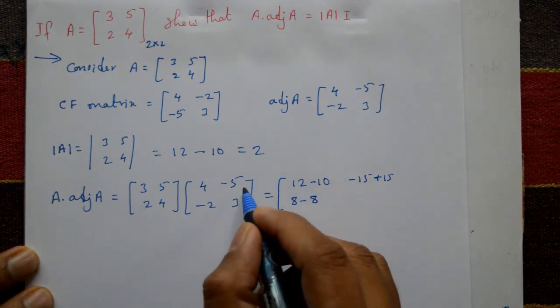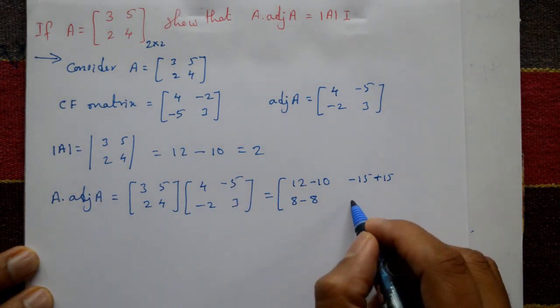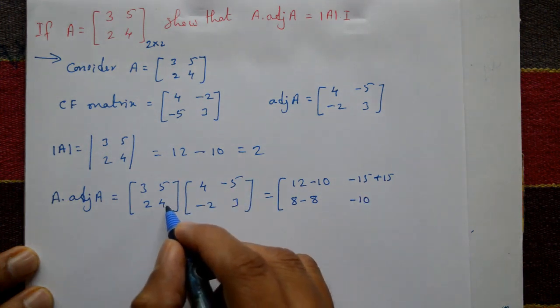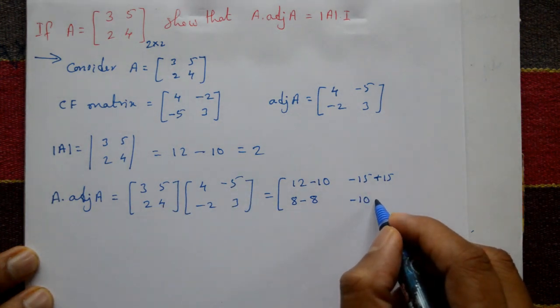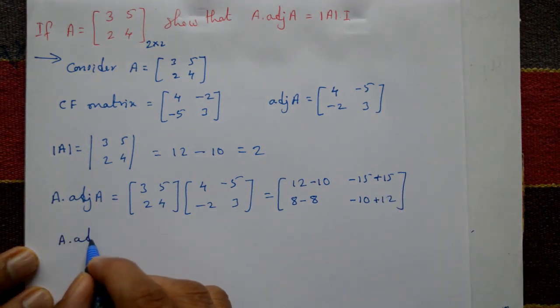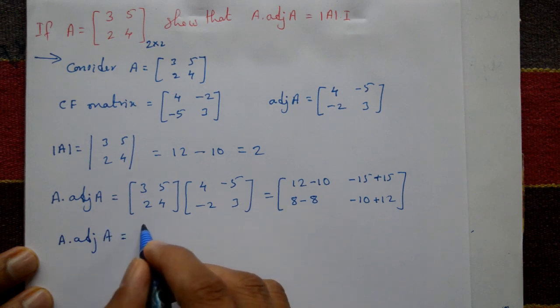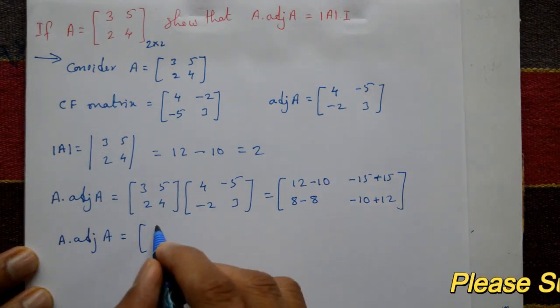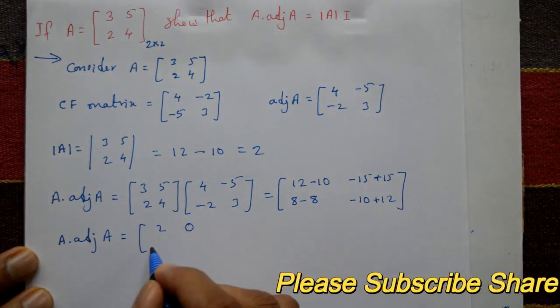Second row first column: 2 into 4 is 8, 4 into minus 2 is minus 8, gives 0. Second row second column: 2 into minus 5 is minus 10, 4 into 3 is plus 12, gives 2.